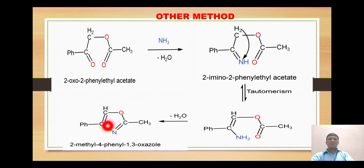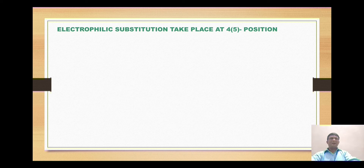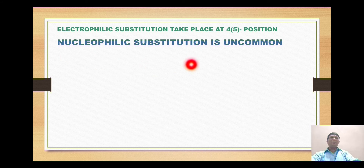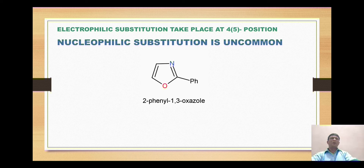Cyclization gives the formation of 2-methyl-4-phenyl oxazole. That is all about the synthesis. Now moving to reactions: electrophilic substitution in oxazole takes place at positions 4 and 5, but preferably at position number 4. Nucleophilic substitutions are very uncommon in the case of oxazole.